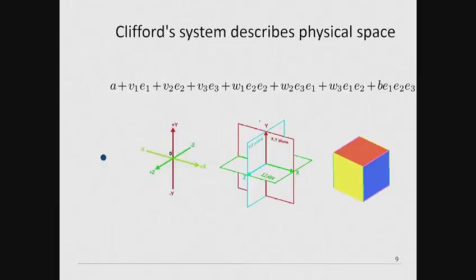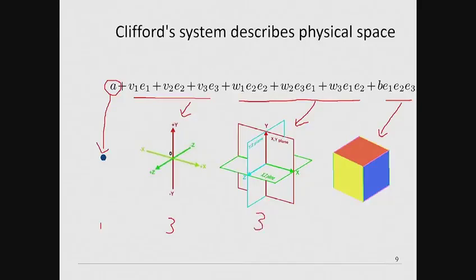Indeed, Clifford's system does more than simply provide an elegant system of vectors. It also allows a description of orientated planes given by the three bi-vectors as well as an orientated volume given by the tri-vector and a point is given by the scalar. We can now see that the key reason that Quaternions can be mistaken for Cartesian vectors is that in three dimensions we have exactly three rotational degrees of freedom as well as three translational freedoms.